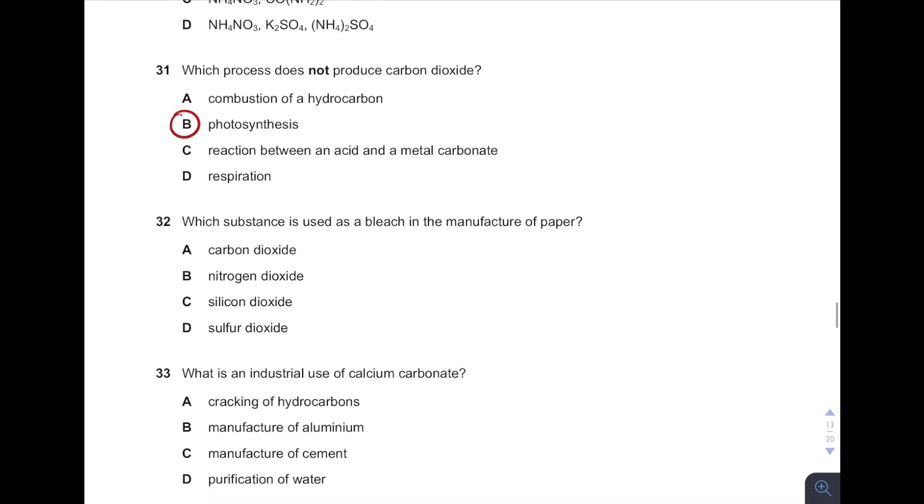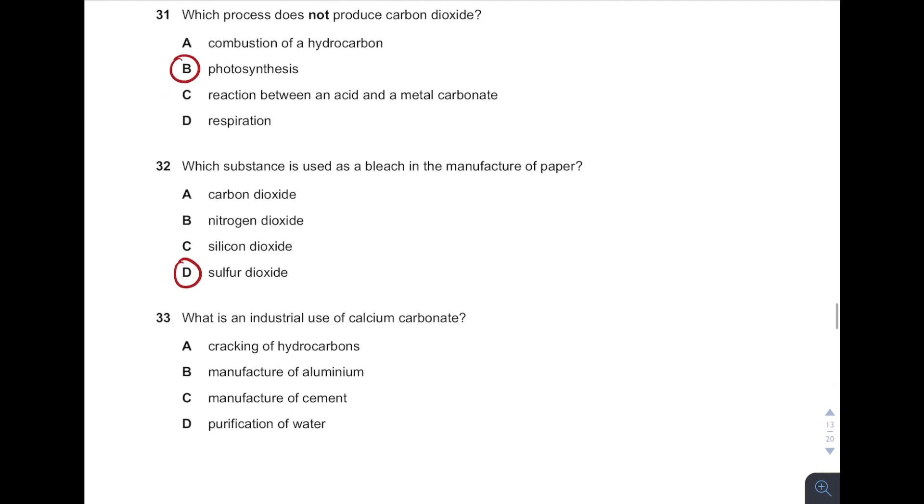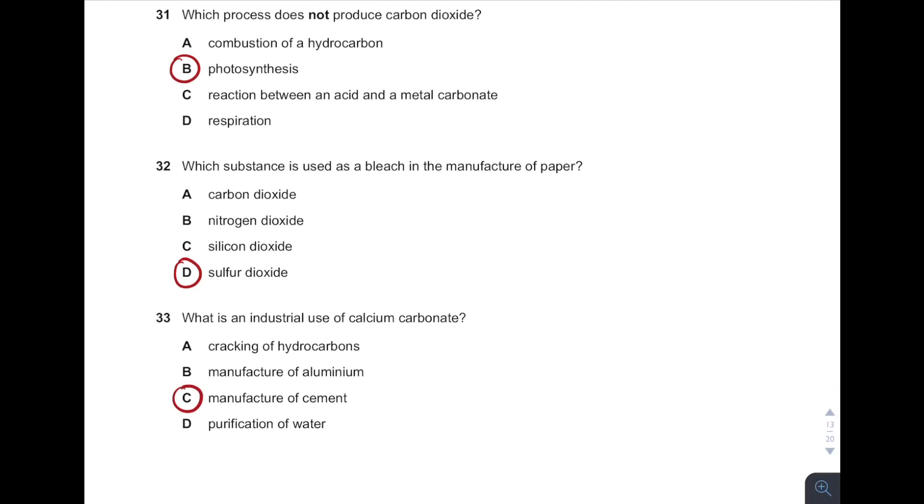Next. Which substance is used as bleach? It is sulfur dioxide gas. Industrial uses of calcium carbonate - remember, calcium carbonate is limestone. It is used in the production of cement.